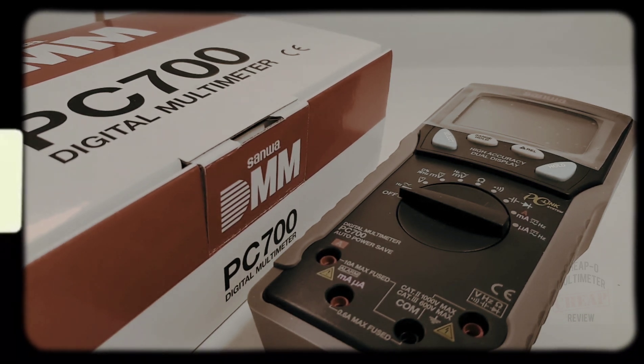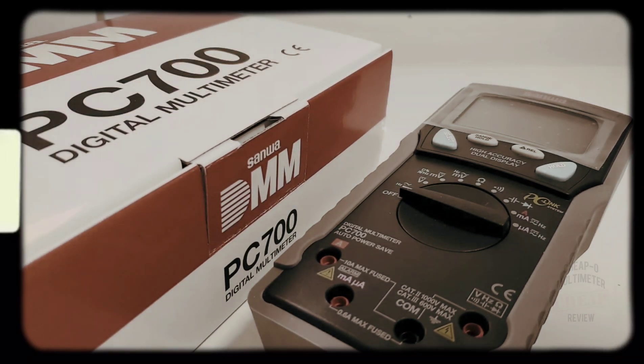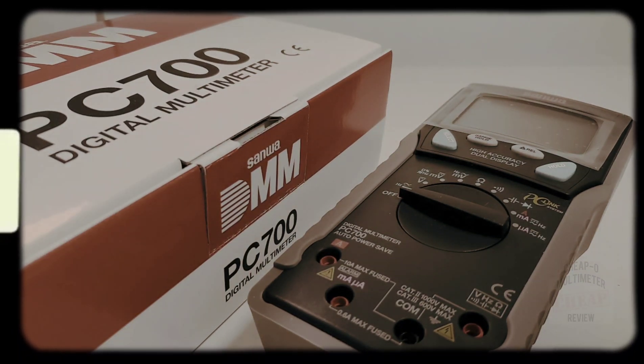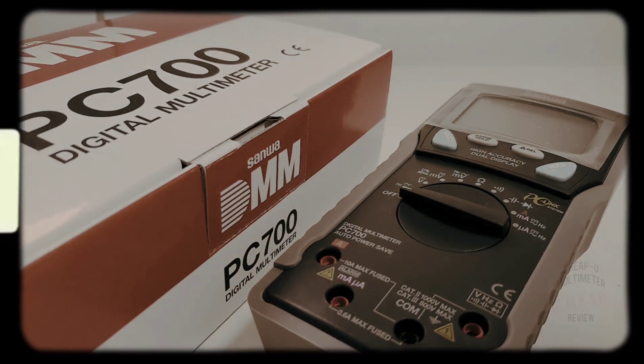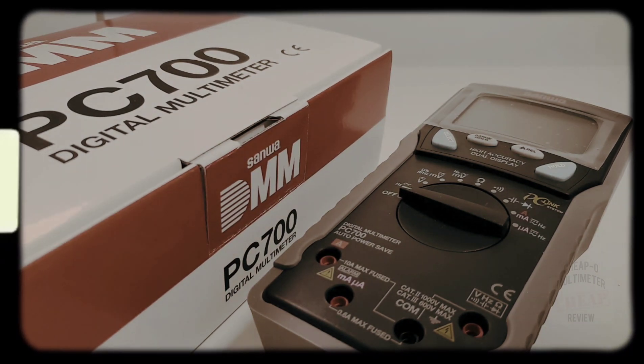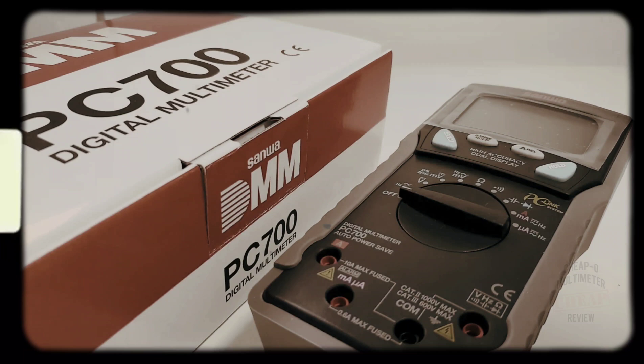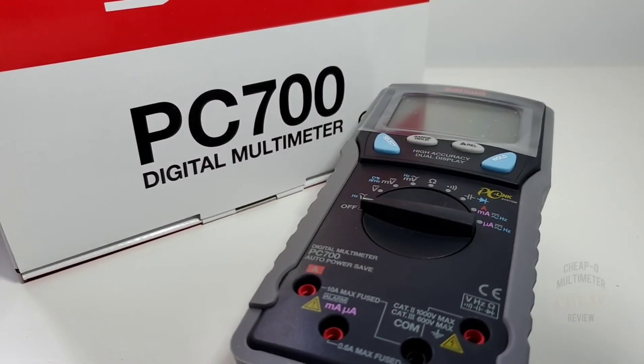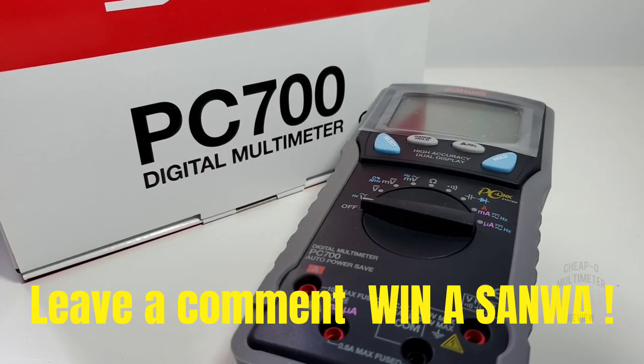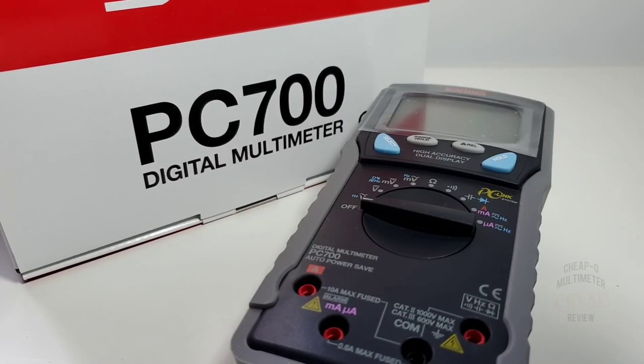Welcome back everybody, final segment in our Sanwa week continues today. In the spotlight: PC700 digital multimeter, 10,000 counts of auto-ranging goodness from Sanwa. Remember, at the end of the week I'm giving away one Sanwa multimeter to one lucky subscriber. All you have to do to get entered is simply leave a comment below and you're automatically entered.